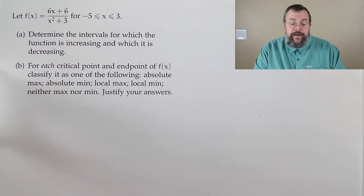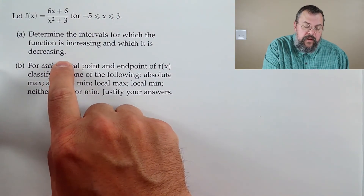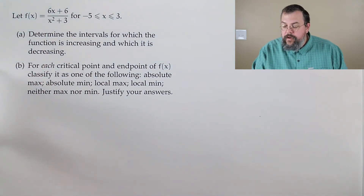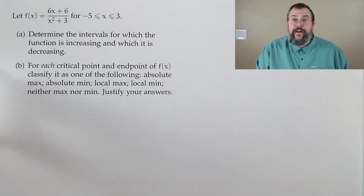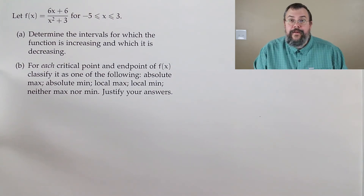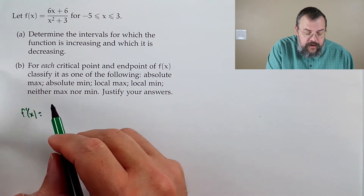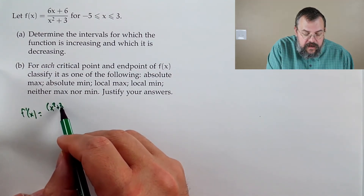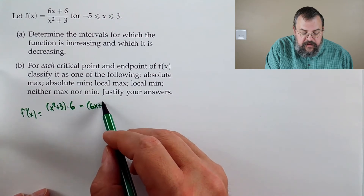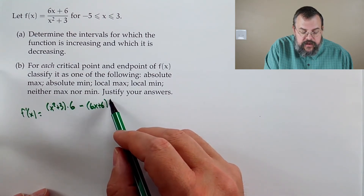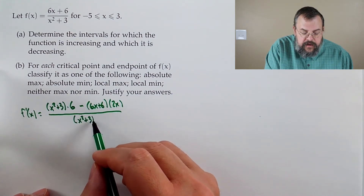Since we're after where the function is increasing and decreasing, we need the derivative. This is a quotient, so time for the quotient rule. f prime of x equals the bottom (x squared plus 3) times the derivative of the top (6), minus the top (6x plus 6) times the derivative of the bottom (2x), all divided by the bottom squared.